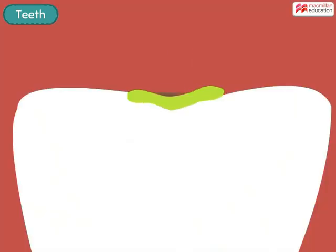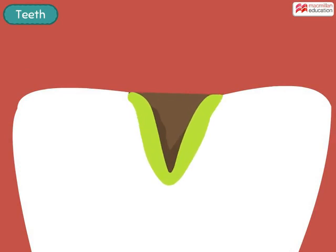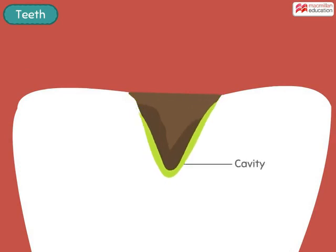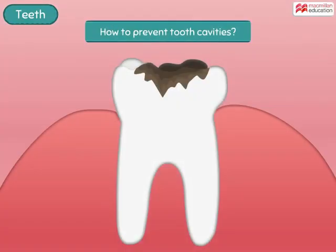This acid can cause holes in the teeth, called cavities, which cause pain and make it difficult for us to eat our favourite dishes. So, how to prevent cavities?